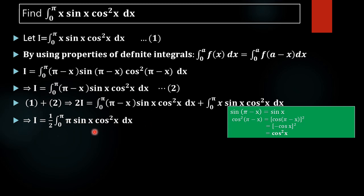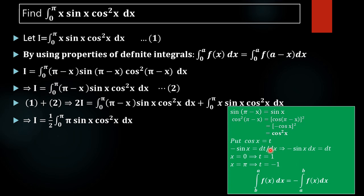By using the properties of the definite integral, we have arrived at I = (π/2)·∫₀^π sin(x)·cos²(x) dx, which is an easily integrable form. To evaluate this integral, we use the substitution method. Let cos(x) = t, then differentiating gives −sin(x) dx = dt, so sin(x) dx = −dt.